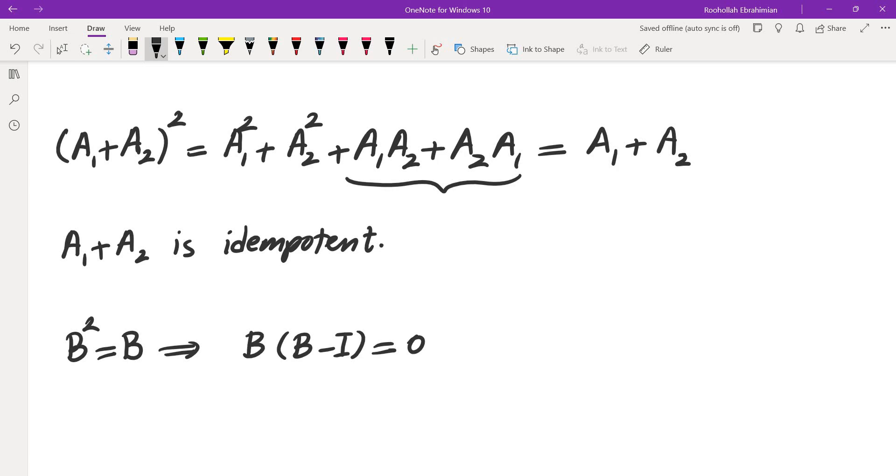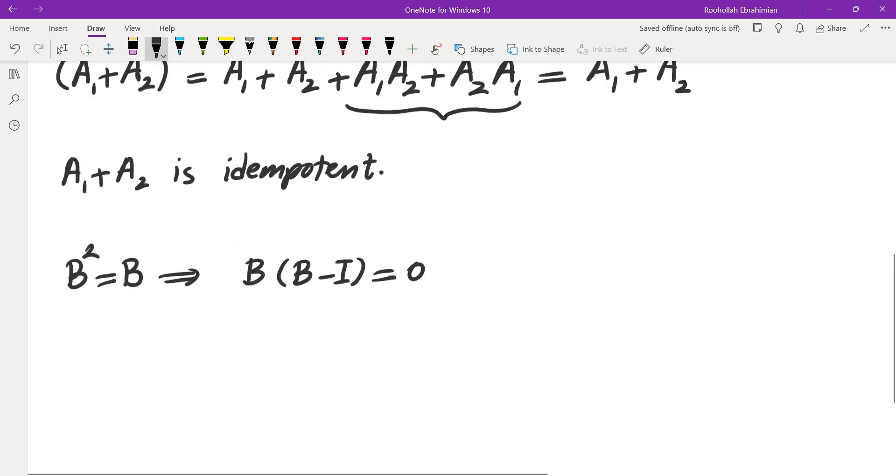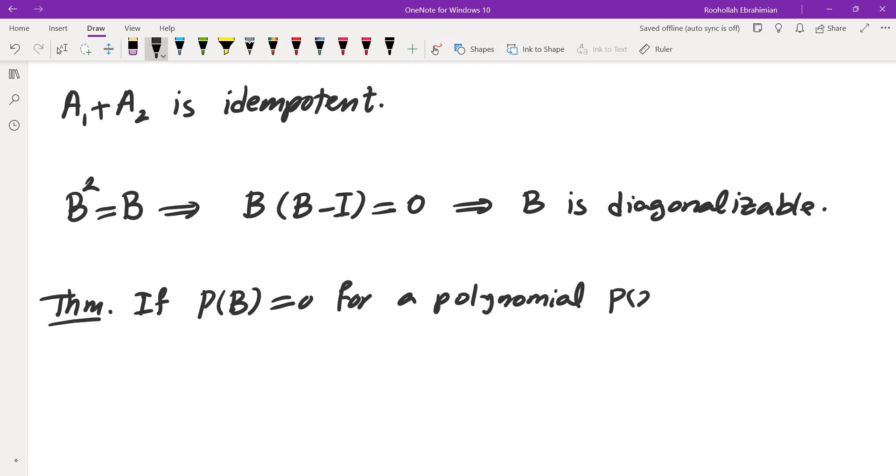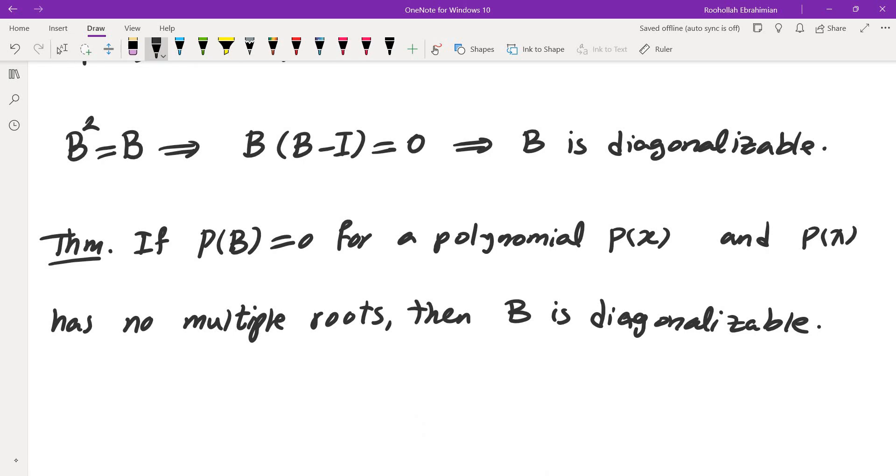So the first thing that I notice is that the minimal polynomial of this matrix doesn't have any multiple roots. And there's a famous theorem that tells you that B is diagonalizable. The theorem tells you if P of B is equal to 0 for a polynomial P of X, and P of X has no multiple roots, then B is diagonalizable. And of course, this P of X is a non-zero matrix. So B is in fact diagonalizable.